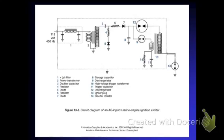This circuit is for a turbine engine ignition exciter system. This is an AC input system. We have 115 volts coming in AC and the first component that we come to is a noise filter.